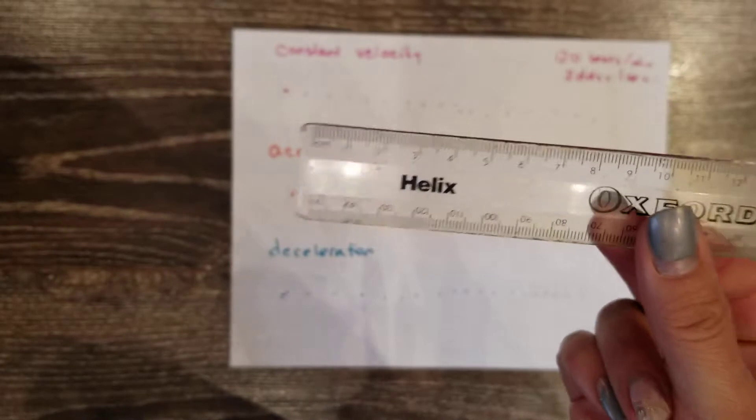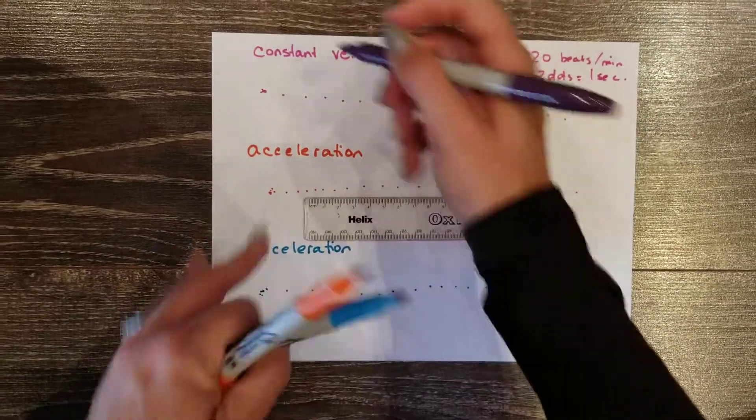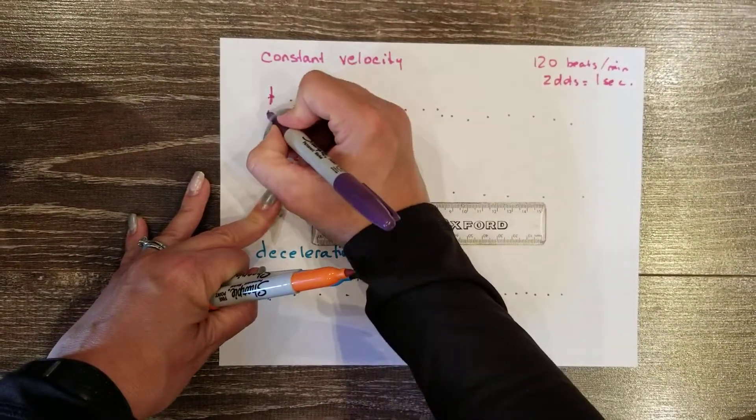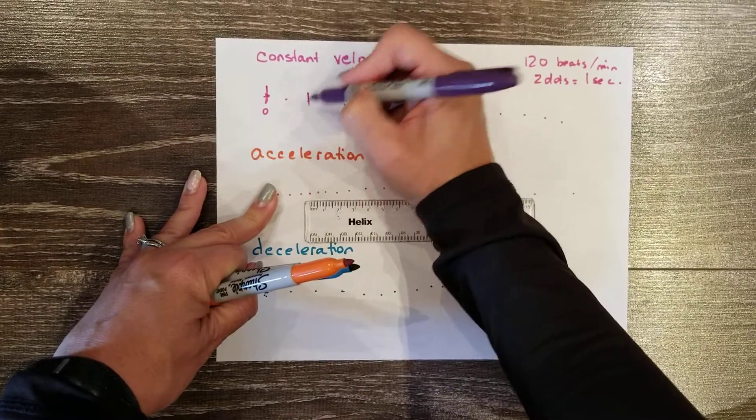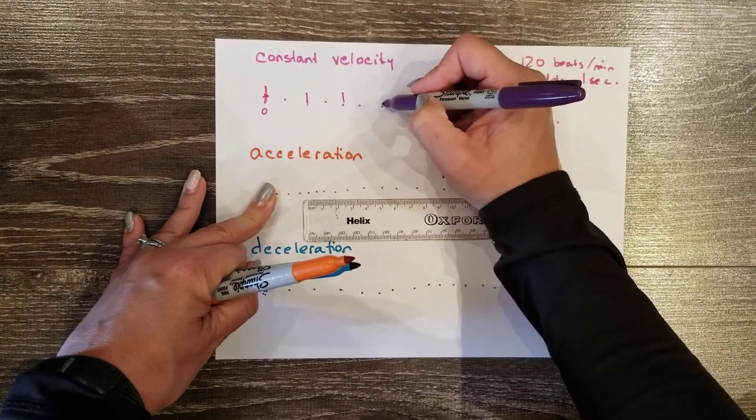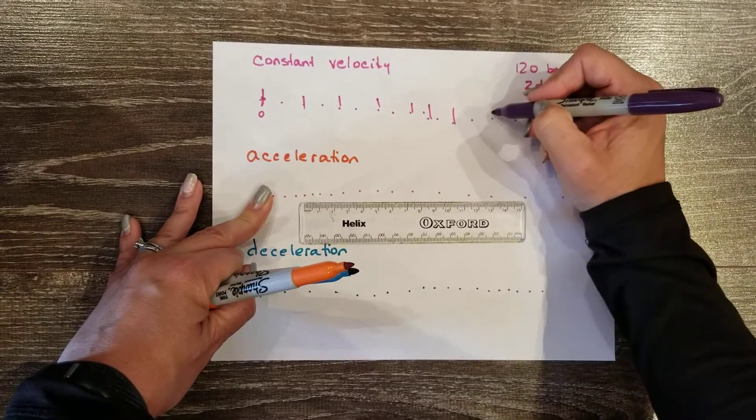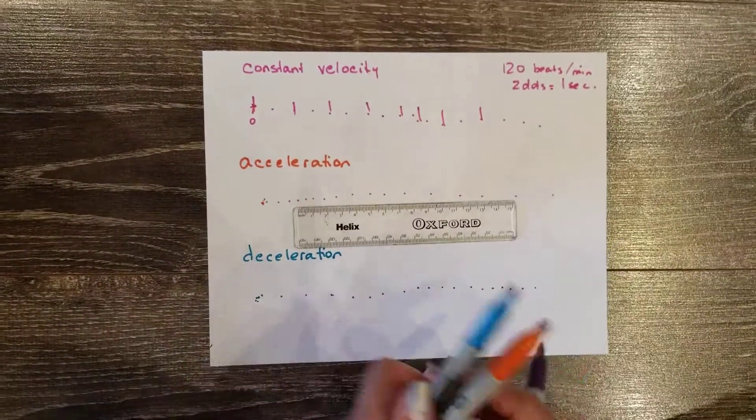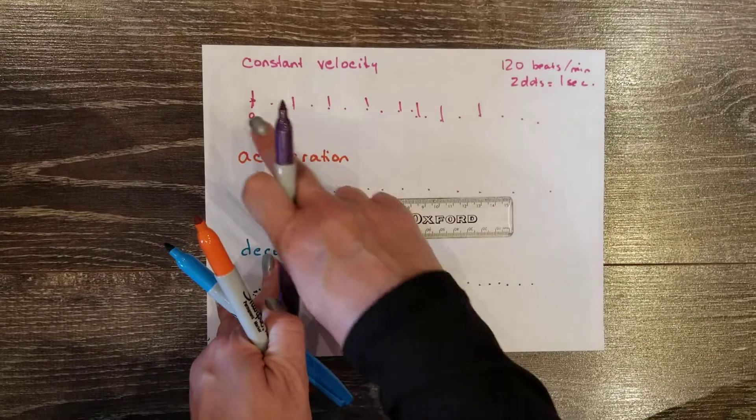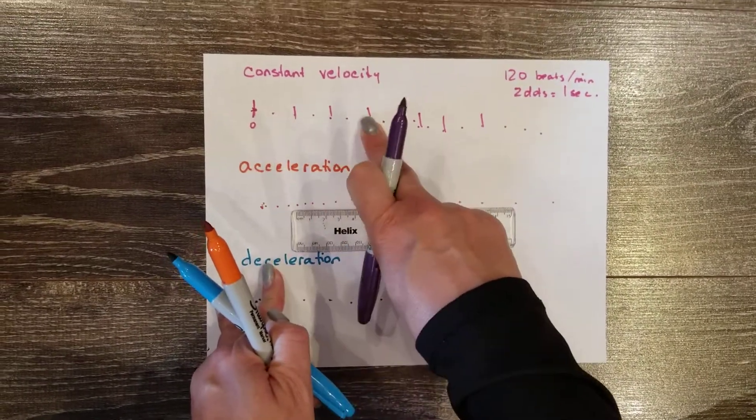Here's where we're going to use a ruler. We're going to start at time zero and then every two dots is one second. I want you to draw a line through every two dots.